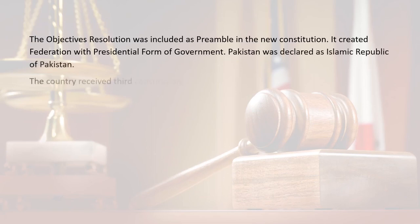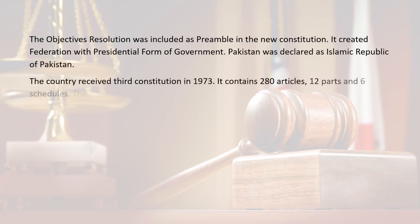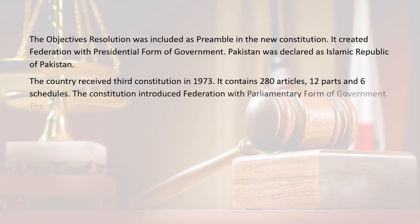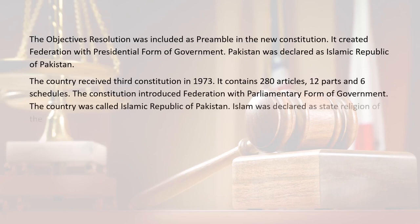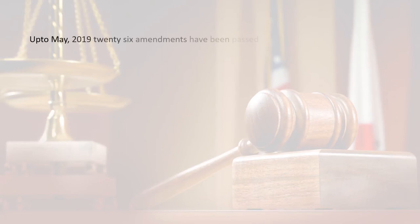The country received its third constitution in 1973. It contains 280 articles, 12 parts, and six schedules. The constitution introduced a Federation with a parliamentary form of government. The country was called the Islamic Republic of Pakistan, and Islam was declared as the state religion of the country. Up to May 2021, 26 amendments have been passed to the constitution of 1973.